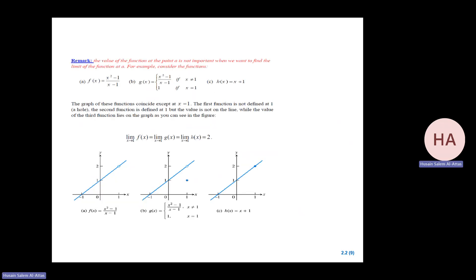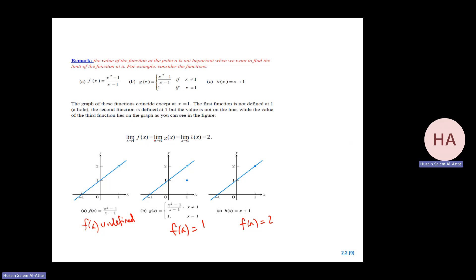Here are examples where f(A) is undefined, and where f(A) is different from the limit. For instance, f(A) equals 1 but the limit is 2, because as x approaches A from either side, the function approaches 2. So f(A) not equaling the limit does not affect the limit value.